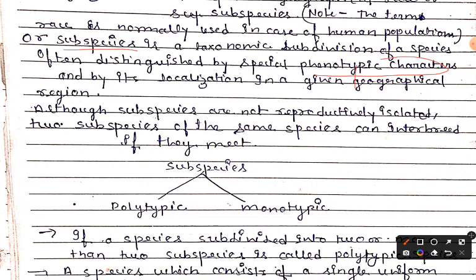Although sub-species are not reproductively isolated, they can reproduce separately. Two sub-species of the same species can interbreed if they meet. When they meet, the same species can interbreed and reproduce.